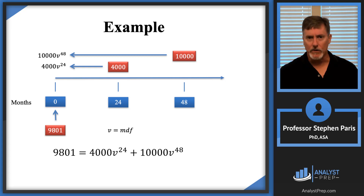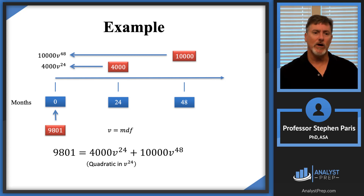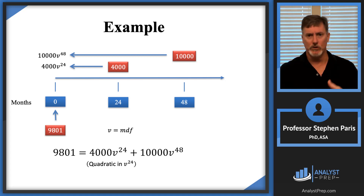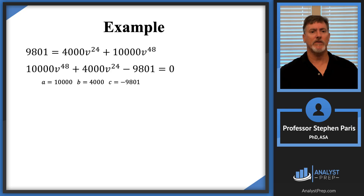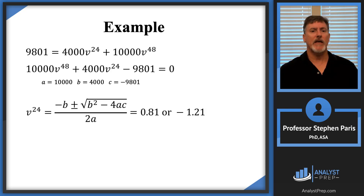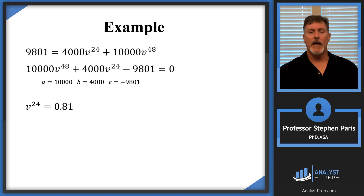This is called an equation of value. You need to recognize that this is a quadratic — specifically a quadratic in v to the 24th. If you let x equal v to the 24th, you get a standard quadratic. I put it in standard form, identify a, b, and c, then apply the quadratic formula. The solutions are 0.81 or negative 1.21. As is often the case, one is extraneous — discount factors are never negative, so I ignore negative 1.21, giving v to the 24th equals 0.81.